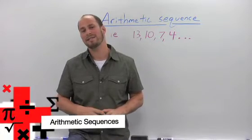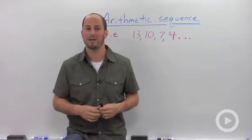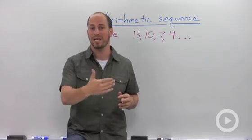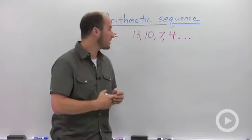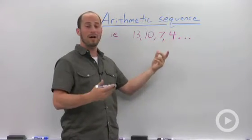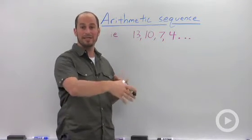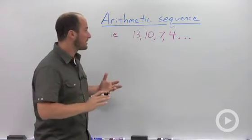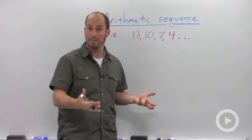An arithmetic sequence is a special kind of sequence where to get from one term to the next you either add or subtract a set difference every single time. For this particular example, we go from 13 to 10 to 7 to 4. What we're doing is subtracting 3 every time to get to the next term. The cool thing about arithmetic sequences is that we can actually get general formulas for them.